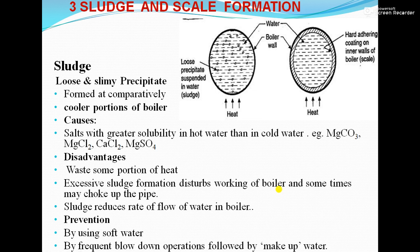So what is sludge and what is scale? You can see the diagram and distinguish between scale and sludge. Sludge is the loose and slimy precipitate present in the water, present in the cooler portion of the boiler. Scale is the hard, adherent coating present on the surface of the boiler metal, in the hotter portion of the boiler.